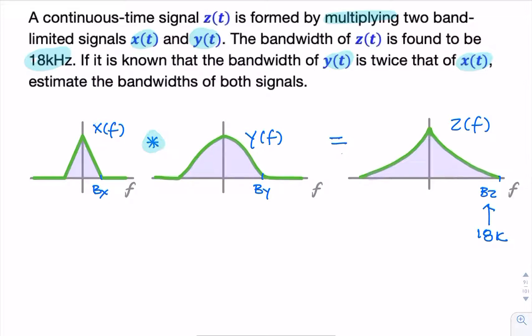We can say bx plus by equals bz. And we know bz is equal to 18. And we also know that the bandwidth of y is twice that of x. So, by is twice bx. That's easy to solve.